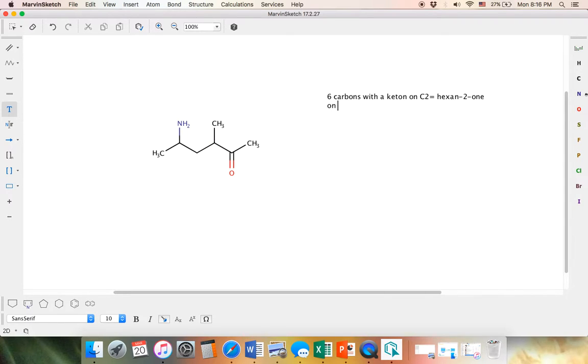We have on C3, give it a little bit more space. C3 has a methyl group. C3, C4, C5 has an amide, which is going to be amino.